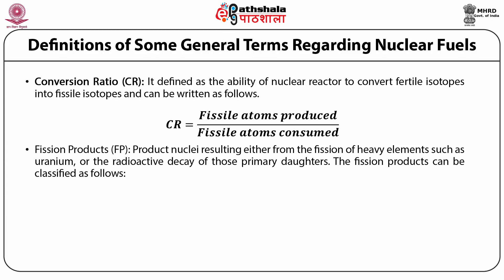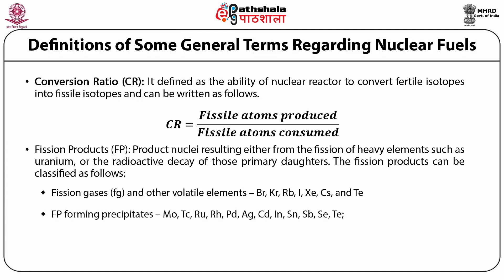Next is fission products (FP): product nuclei resulting either from the fission of heavy elements such as uranium, or the radioactive decay of those primary daughters. Fission products can be classified as follows: fission gases and other volatile elements such as bromine, krypton, rubidium, iodine, xenon, cesium and tellurium.